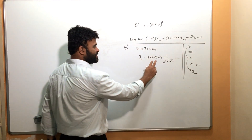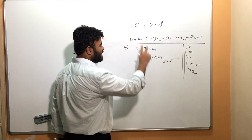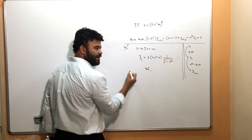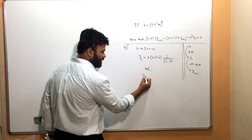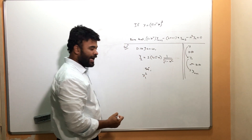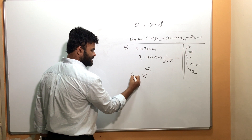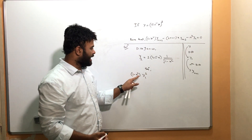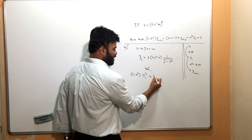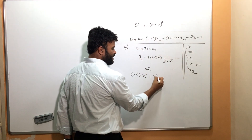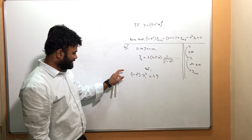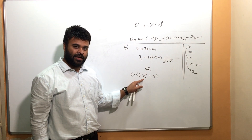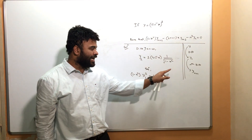When I square sin⁻¹x, that's just y. So squaring both sides: y₁² on the left, and taking (1-x²) to the other side removes the root. This gives us (1-x²)·y₁² = 4·(sin⁻¹x)² = 4y. This is a clean equation without any square roots.